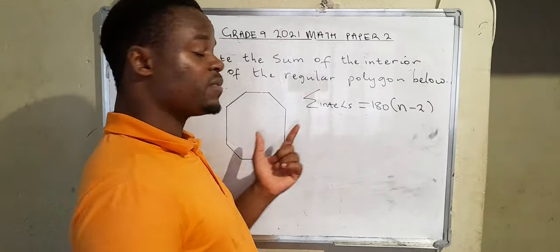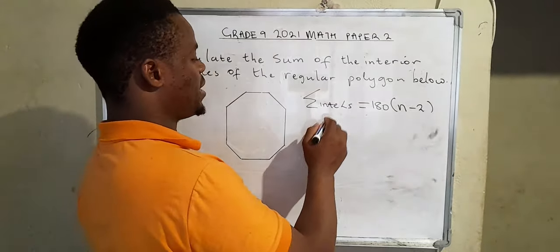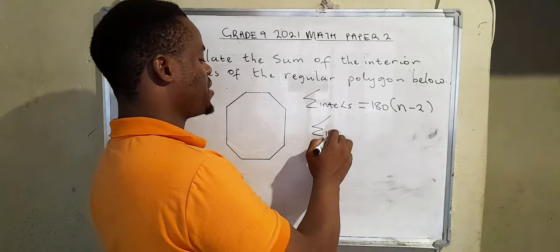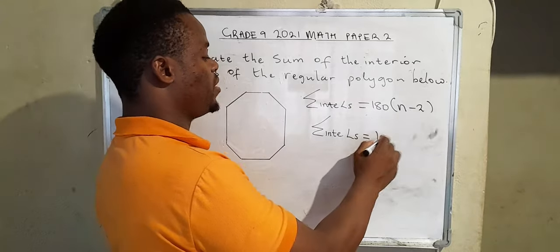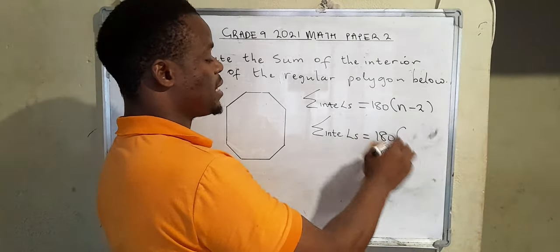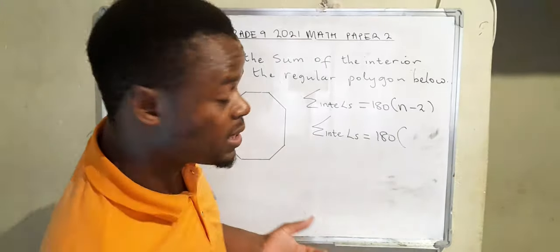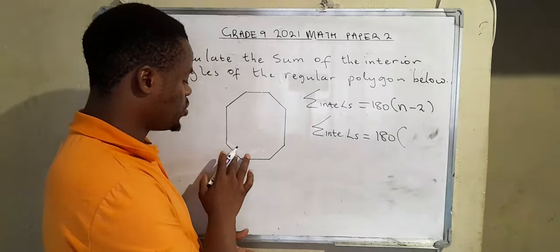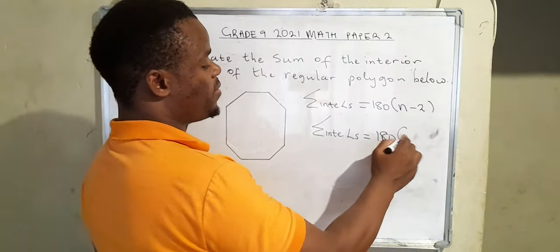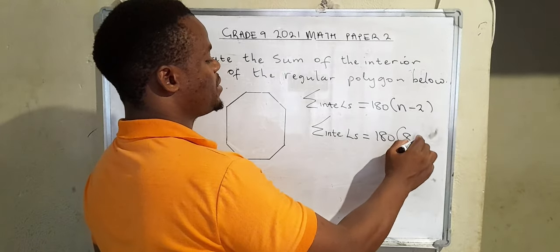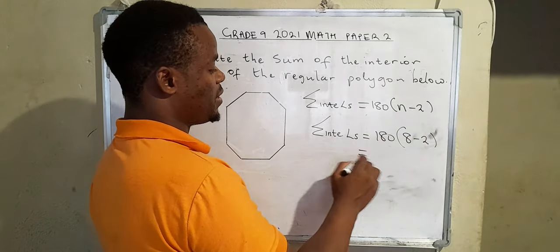I'm going to say sum of the interior angles will be 180 times the number of sides. We're going to count the number of sides that we have here: one, two, three, four, five, six, seven, eight. So when there's n, we're going to write eight minus two.